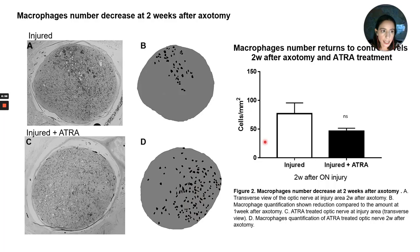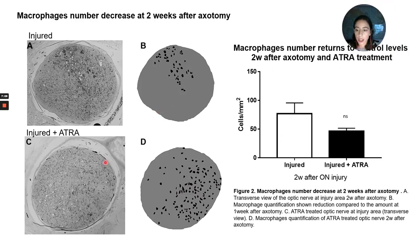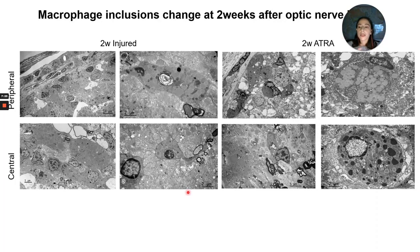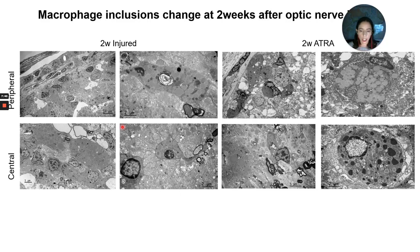We wanted to know whether this increase in cells was sustained. At two weeks, we saw that macrophages had decreased, returning to control levels — so the effect appears to be transient. When we looked further at how these macrophages appeared, they seemed really full with lipid inclusions instead of more debris as seen in the one-week macrophages, suggesting the cleaning work is more complete by that point.